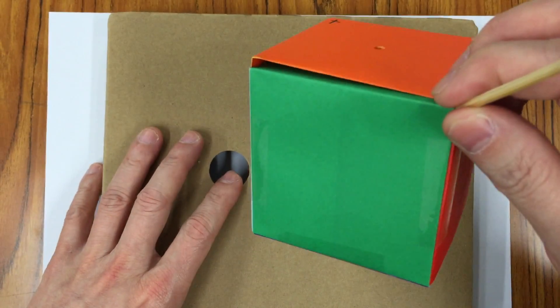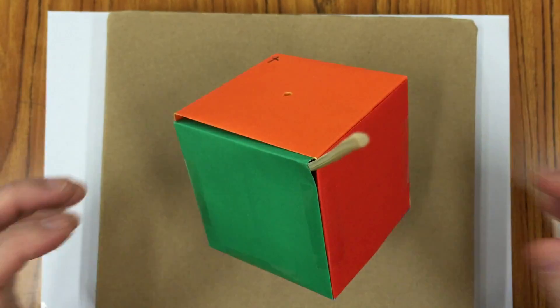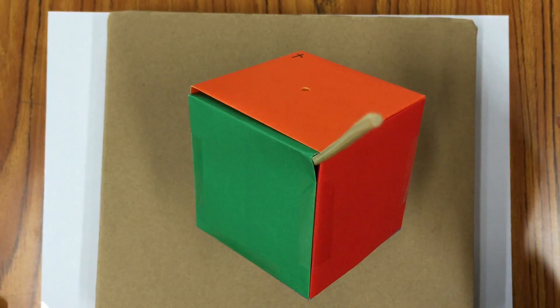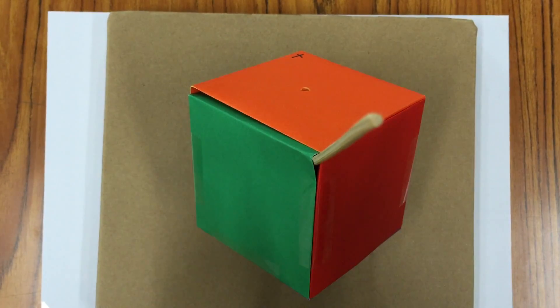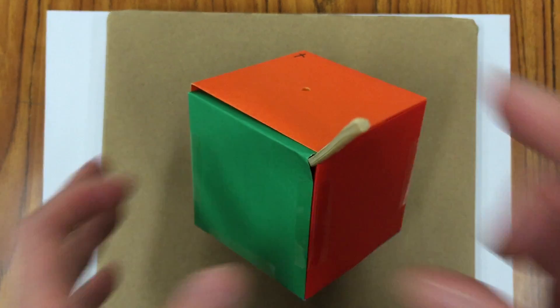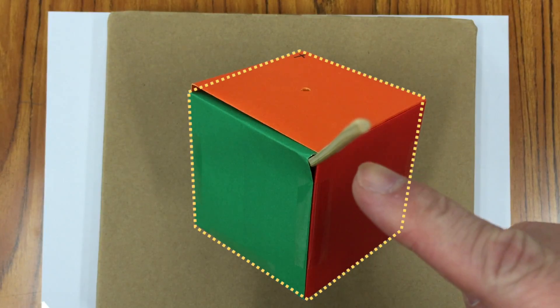We can put the cube in this way. Let's say this is the original position of the cube. And now this is the rotation axis.